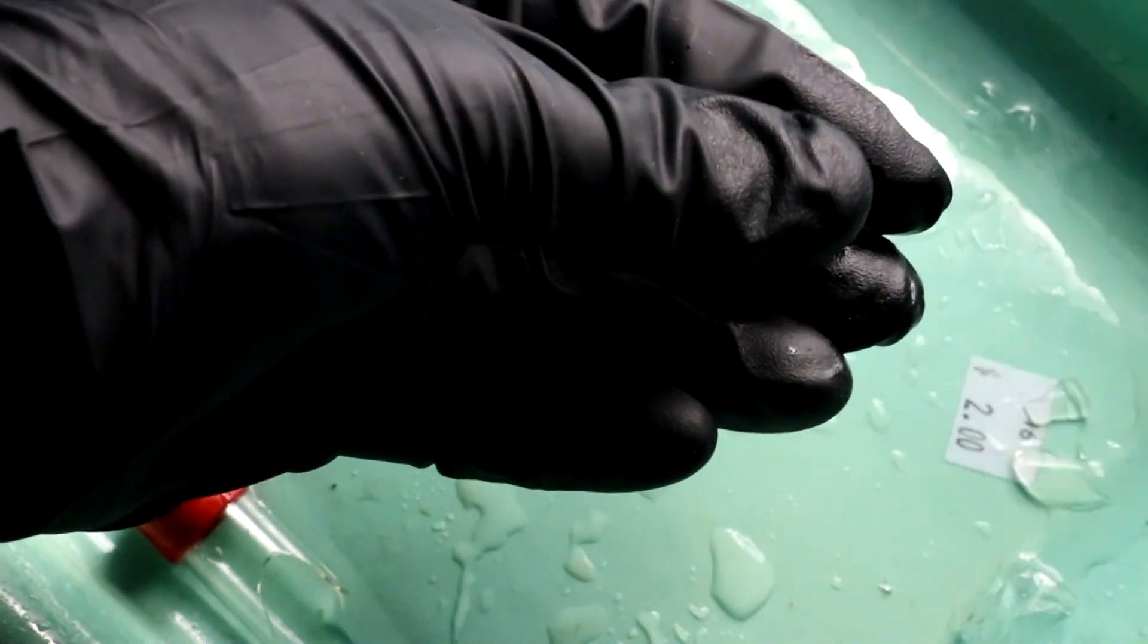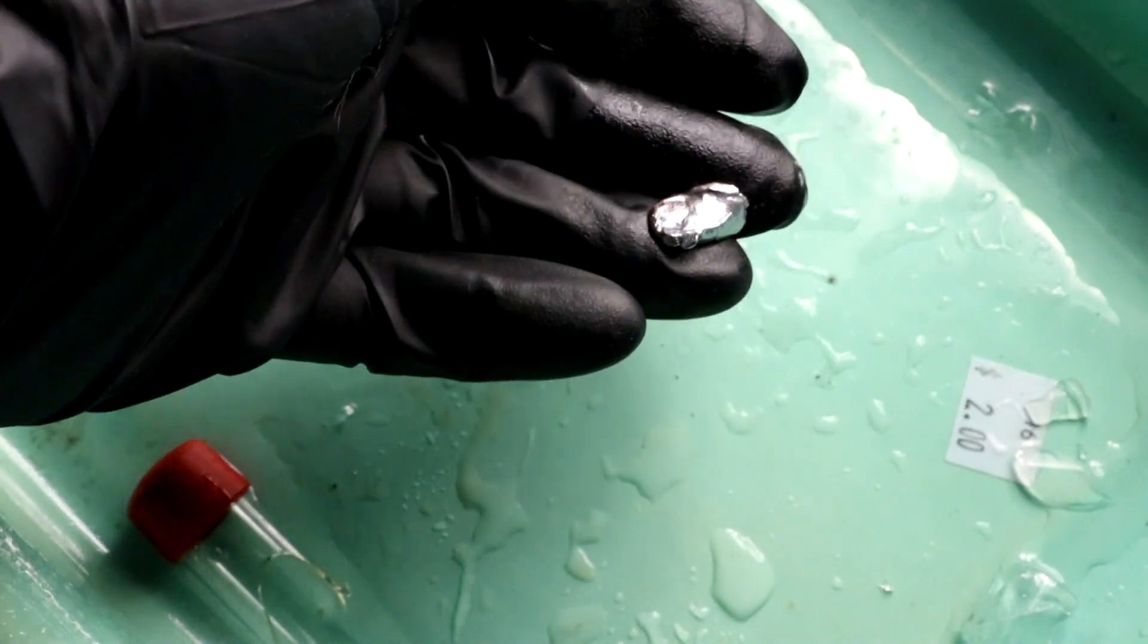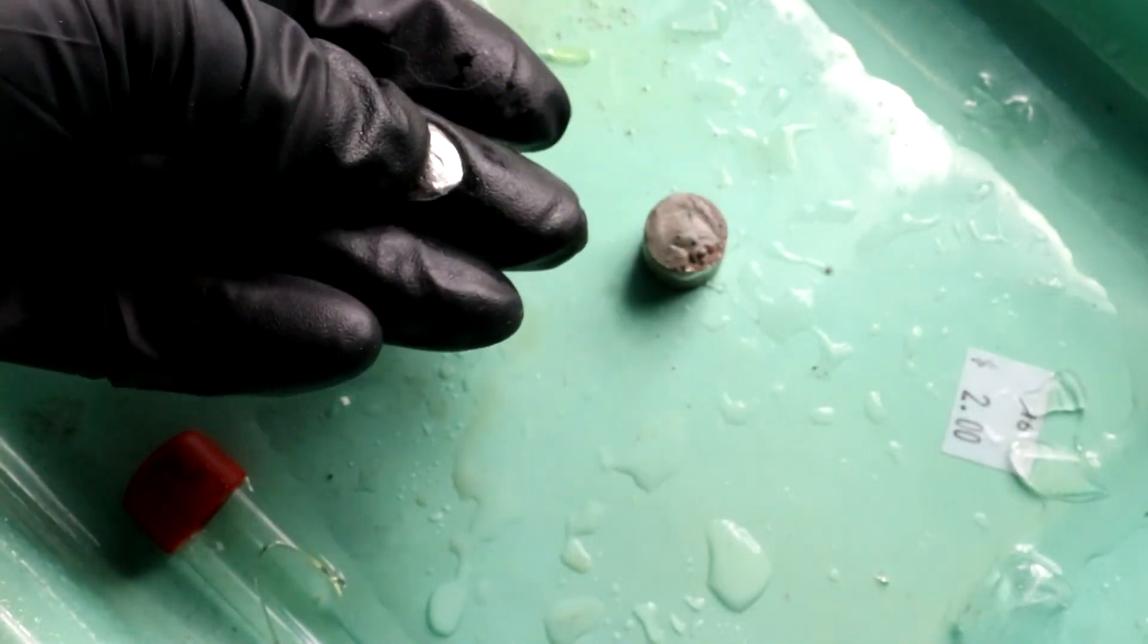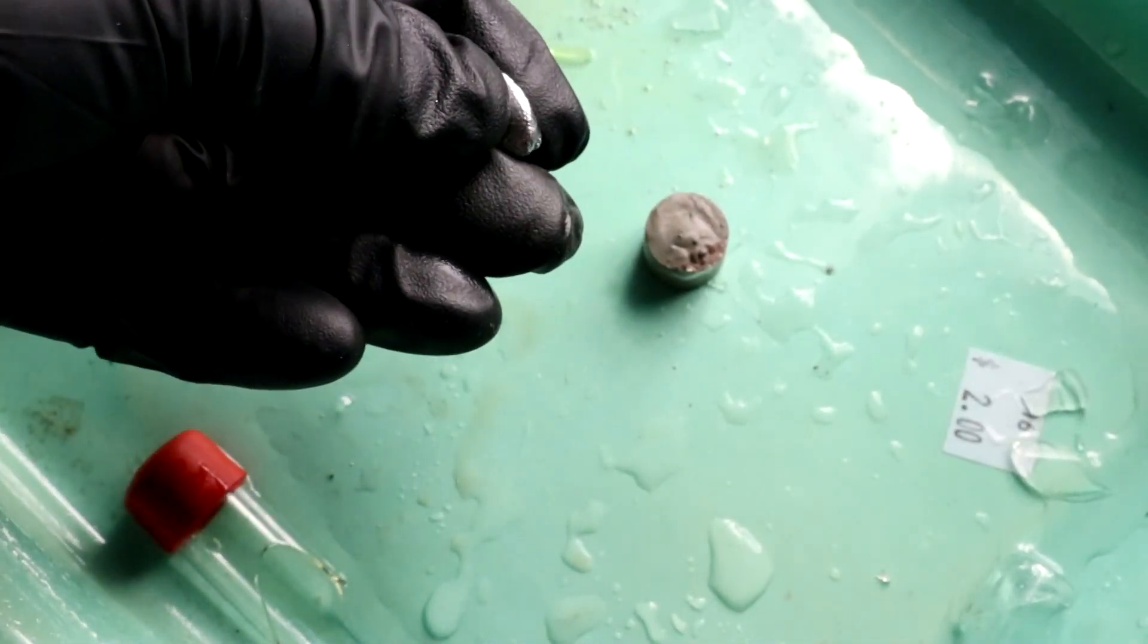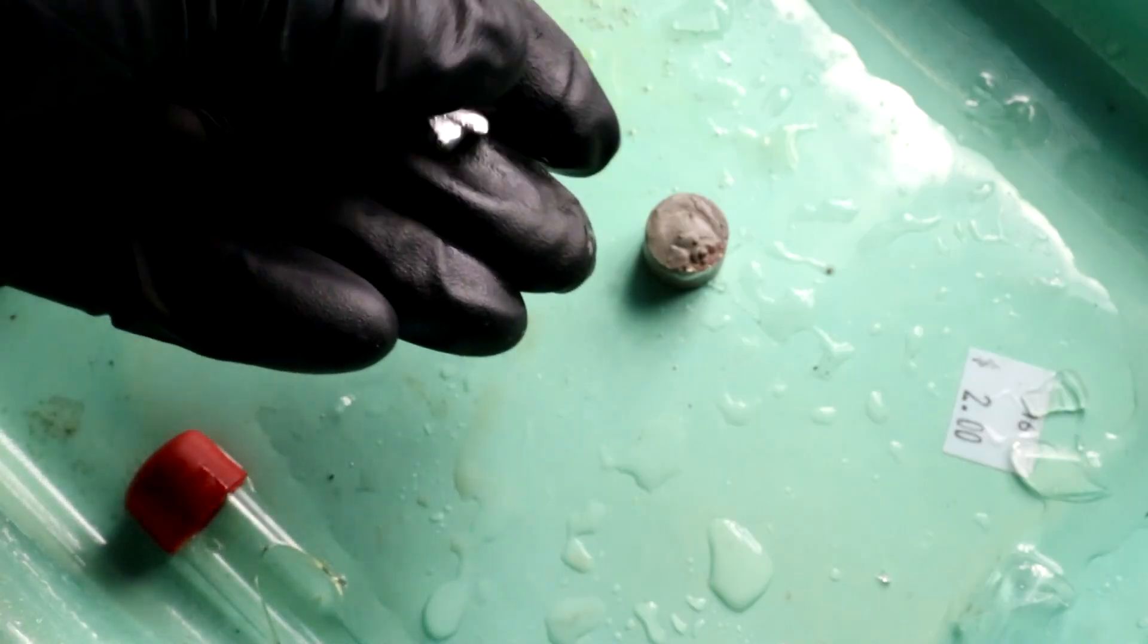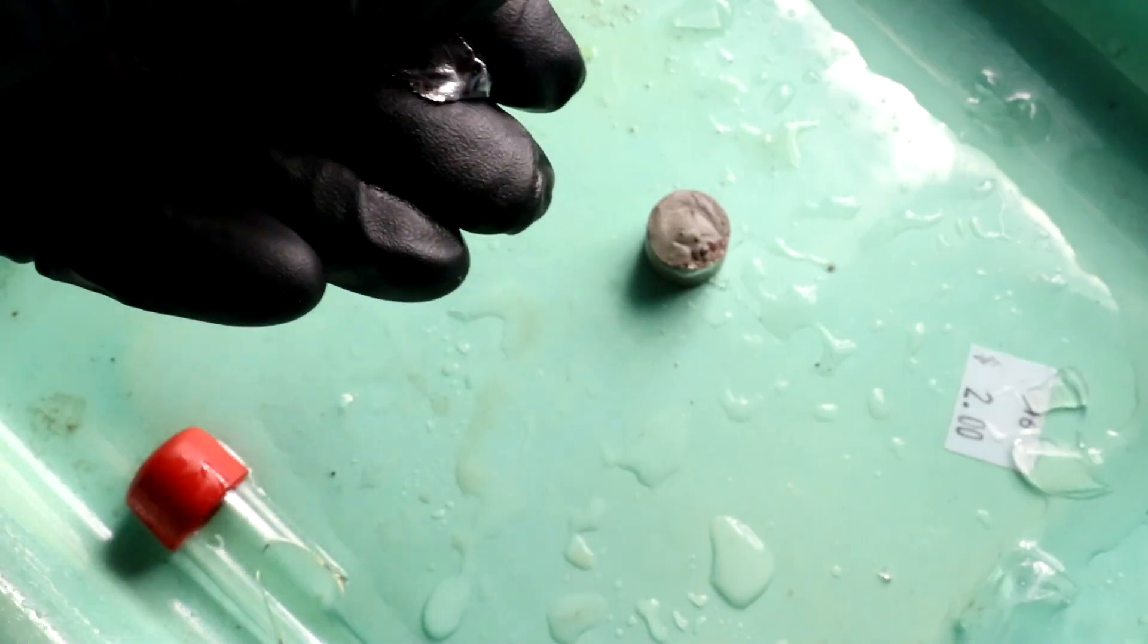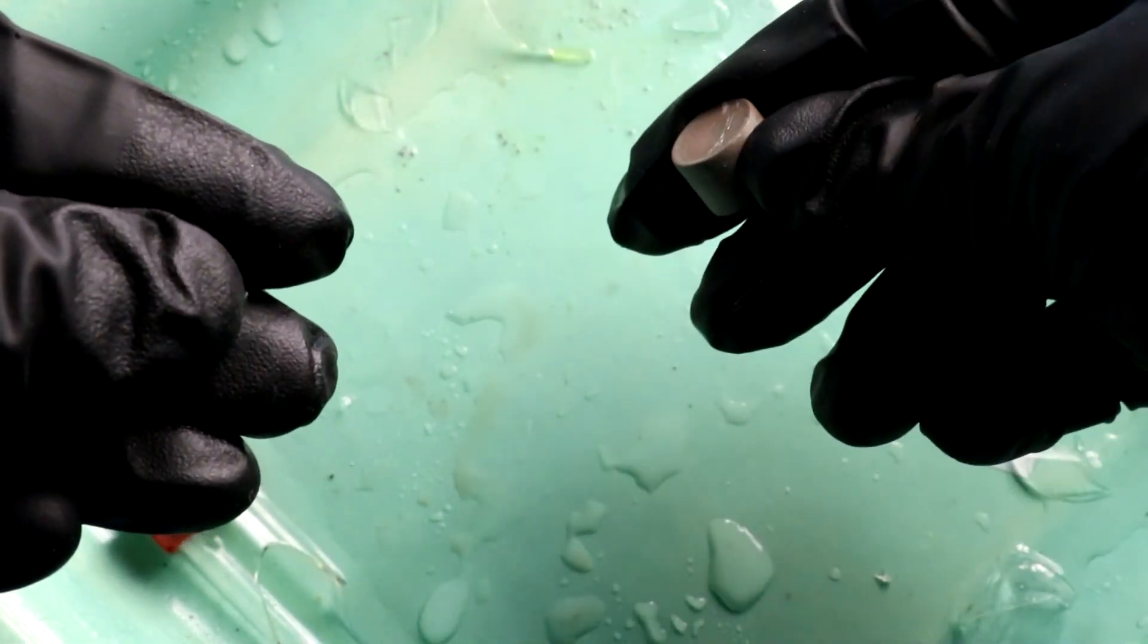Which means I can take this, form it into whatever shape I like, and let it sit. And it will solidify into this. This is of course the appeal of dental amalgam. You have something that you can mix up that's kind of goopy and pliable. But after letting it sit for a while, maybe give it a little bit of squeeze, you can form something that's rock hard. Like this.